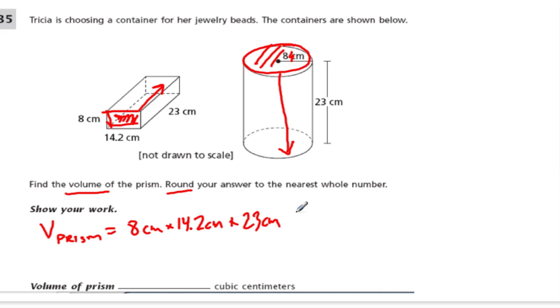So the volume of the prism is then 8 times 14.2 times 23. You'll have a calculator on this part. So when you plug in the calculator, at this point, record the exact answer of 8 times 14.2 times 23. And if you multiply those three numbers, you should get 2612.8.